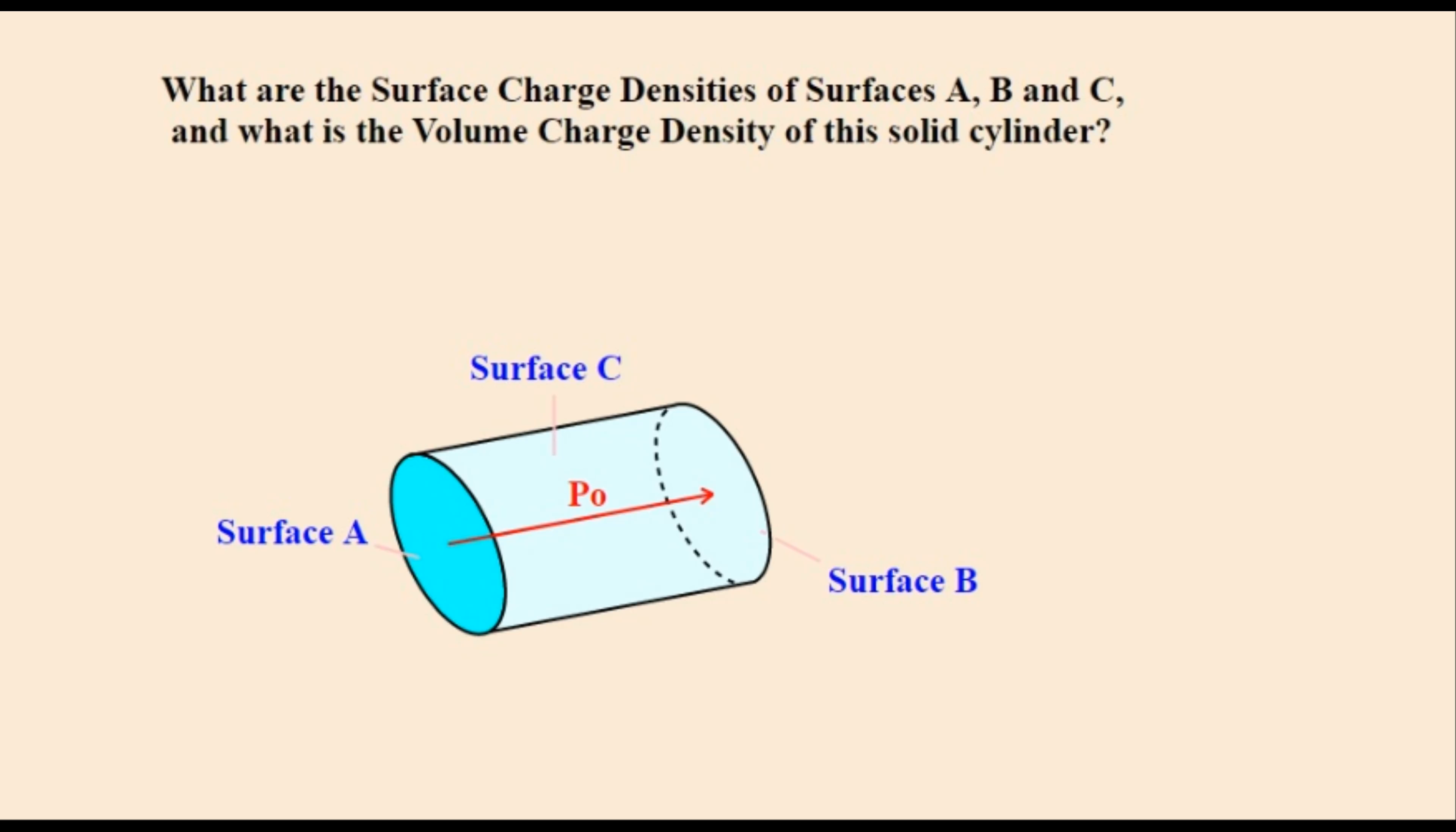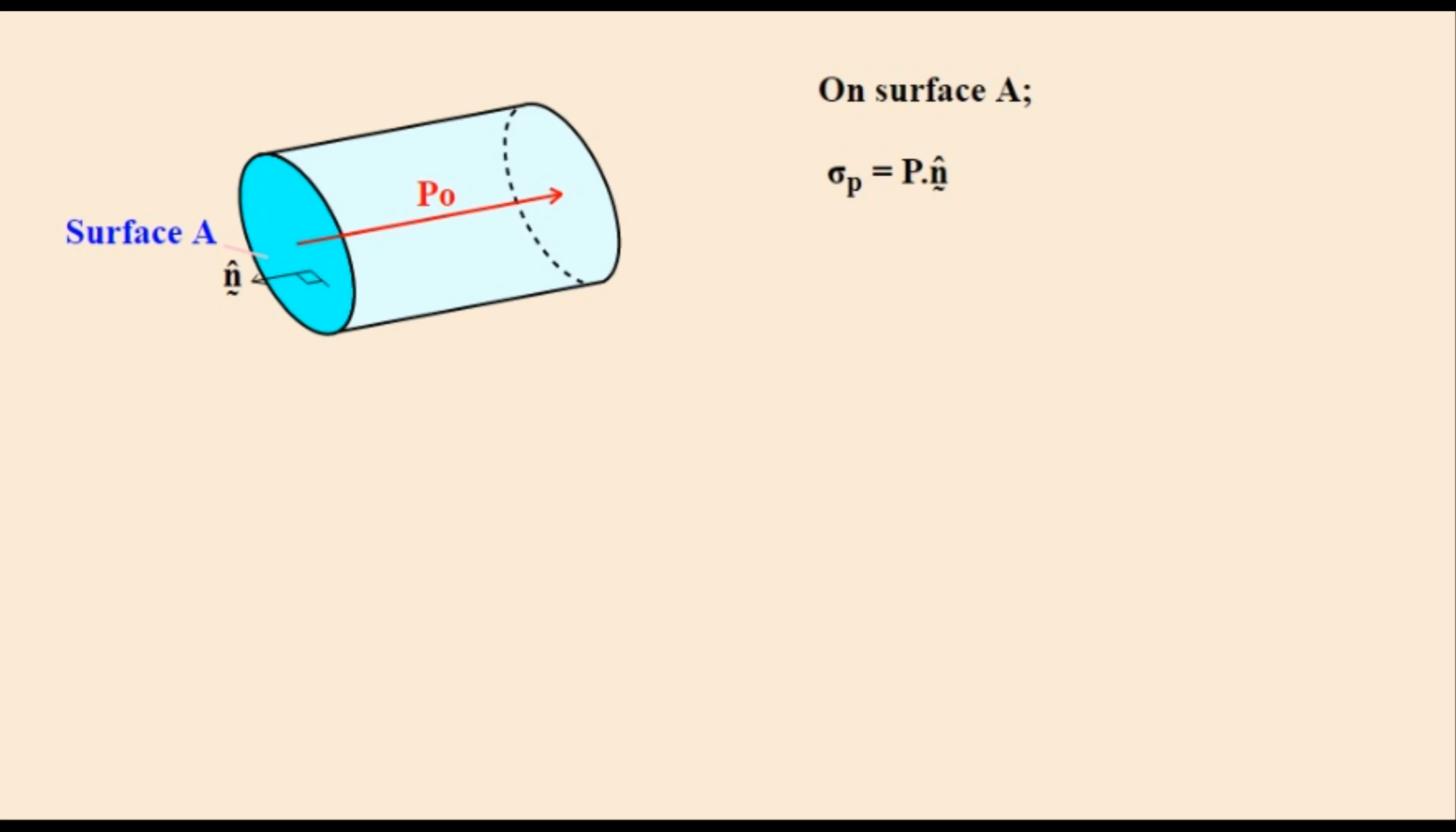Here is an example of a polarized cylinder. The surface charge density is to be calculated for all the surfaces as well as the volume charge density inside it. Starting with surface A having the end colored cyan or glow light blue we use the equation shown which is a sort of definition equation.